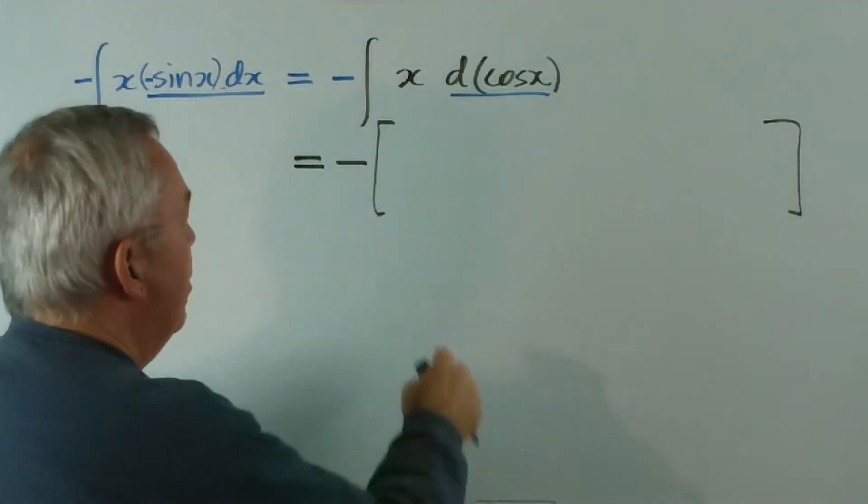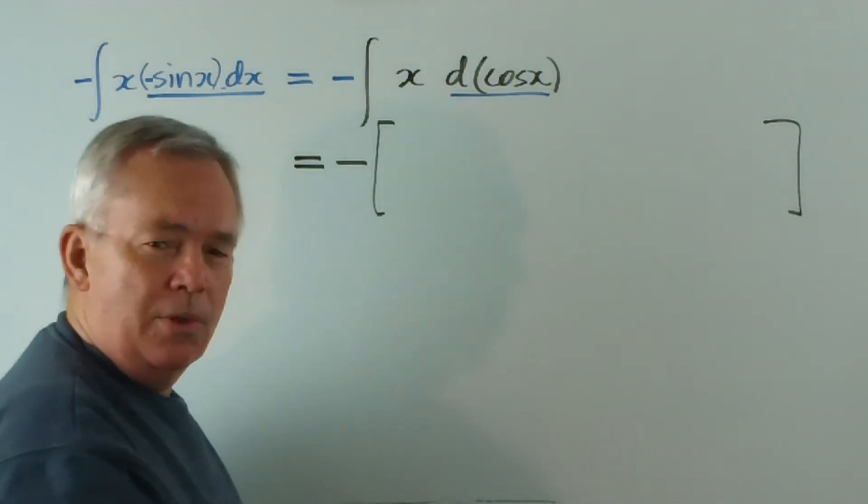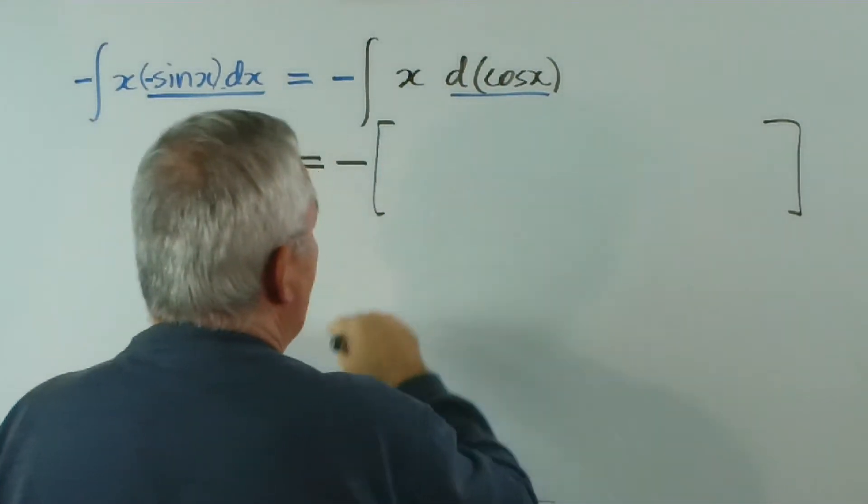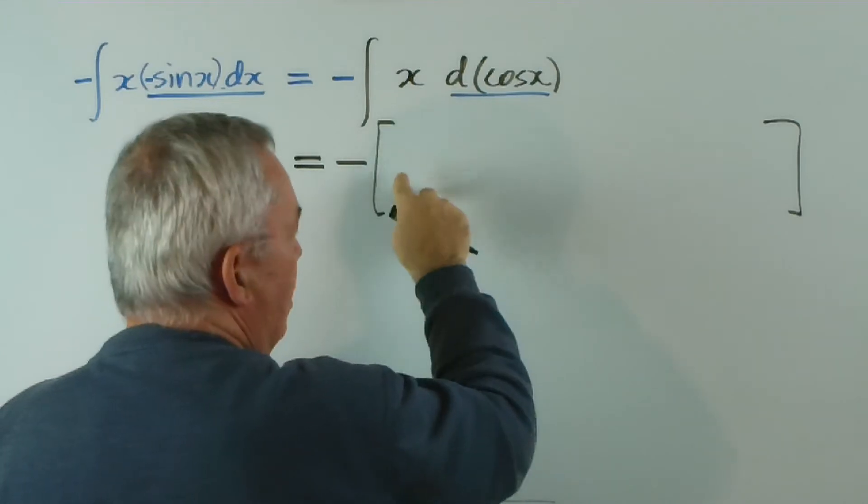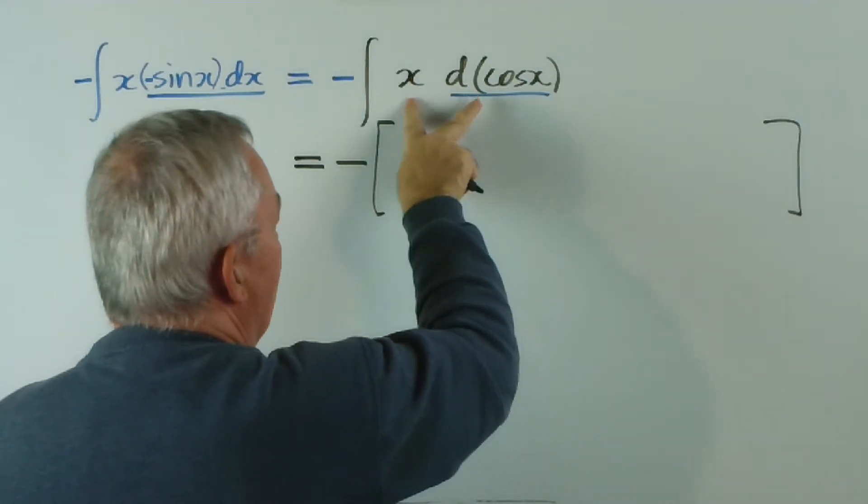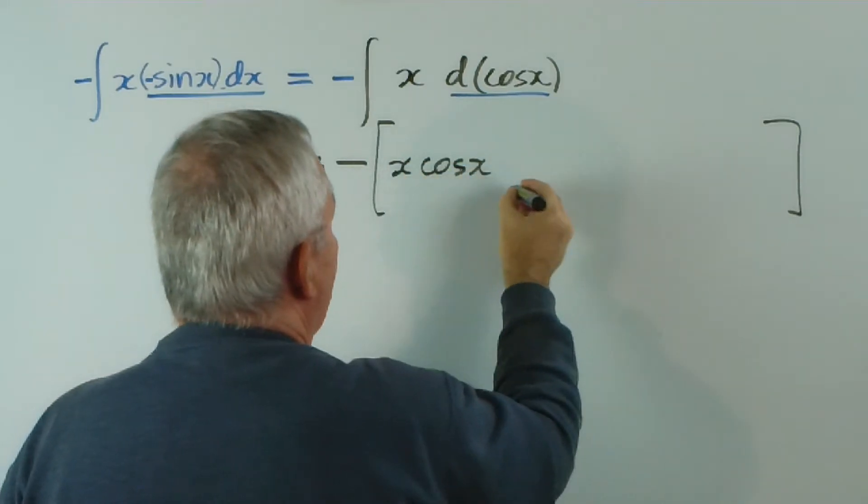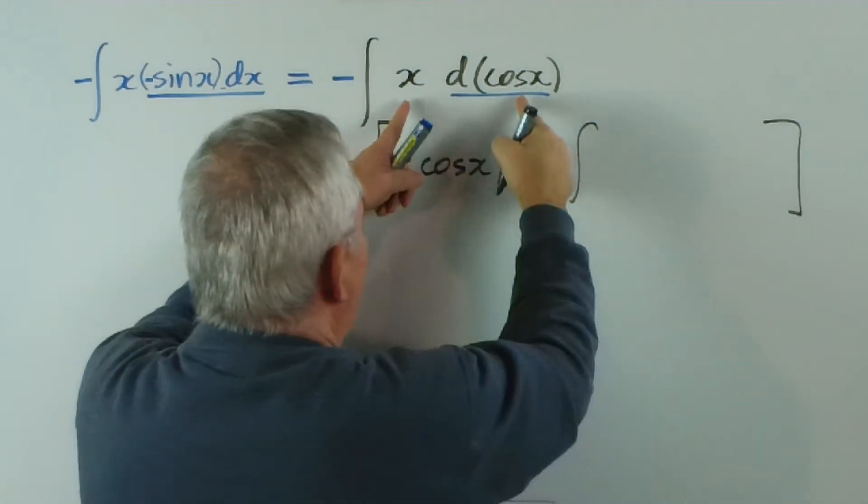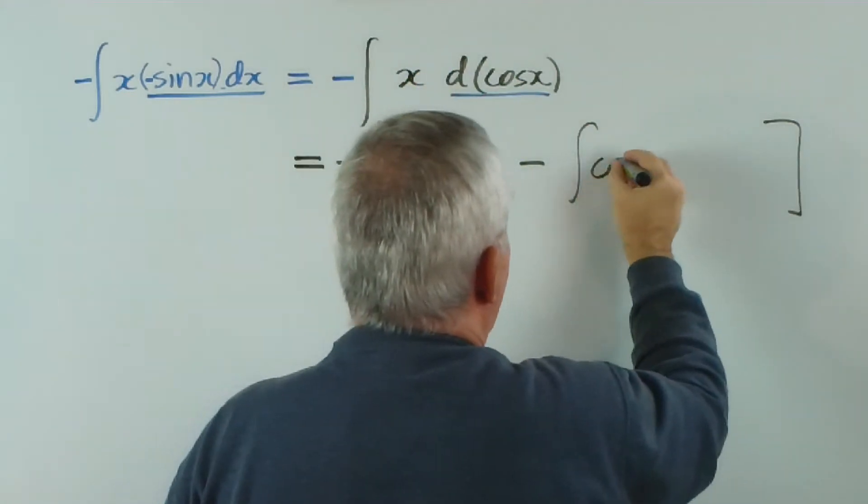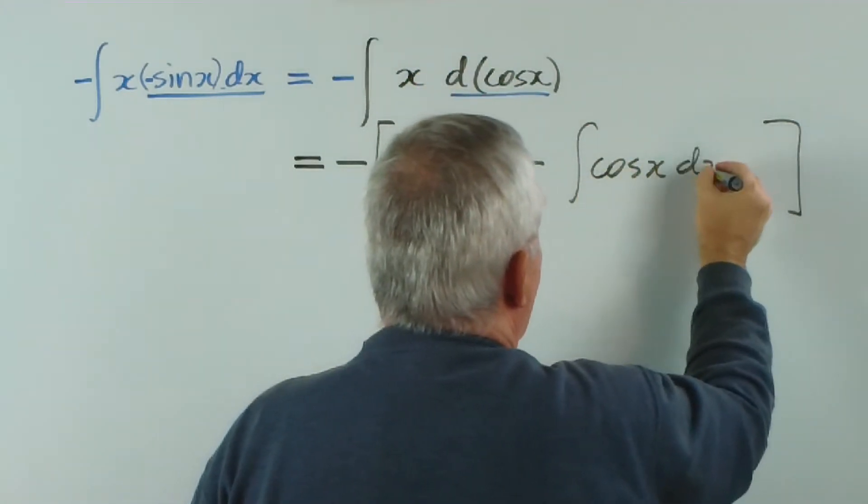How do we do it? Well, here are our two functions, often written as u and v. The first part, when we integrate by parts, is u times v. So, it's just going to be x cos x minus the integral, and we swap the functions, cos x dx.